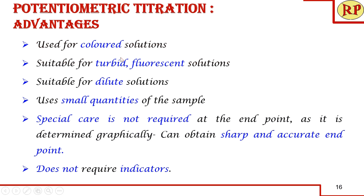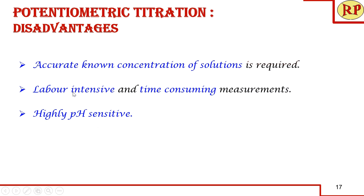There are many advantages of potentiometric titration: it is used for colored, turbid, fluorescent, and dilute solutions; very small quantities of sample are sufficient; special care at the end point is not required; a sharp and accurate end point is obtained, especially with the first and second derivative curves; everything is determined graphically; and no indicator is required. Some drawbacks include: accurate known concentrations of both analyte and titrant solutions are required; it is labor intensive, requiring two titrations for accuracy; it is time consuming; and it is highly sensitive to pH, where a slight pH change can cause a drastic change, especially in acid-base titrations.